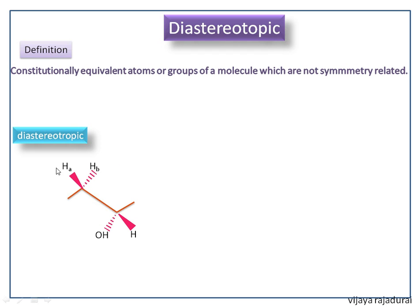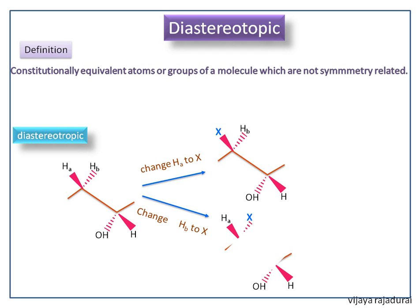These two equivalent hydrogens are marked as HA and HB. If we change HA to X we get this structure. If we change HB to X we get this structure.